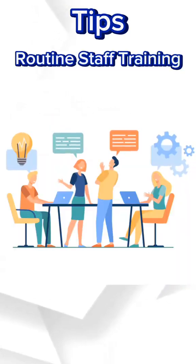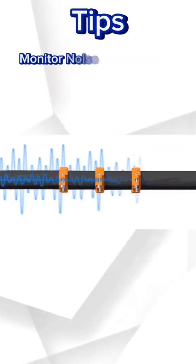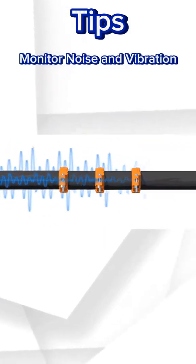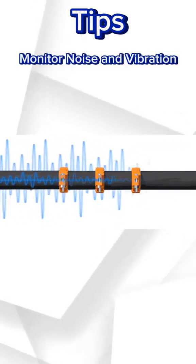Tips: 1. Ensure fluid purity. Avoid particulate accumulation that can damage the vanes. 2. Routine staff training. Train operators to perform regular maintenance. 3. Monitor noise and vibration. Increased noise or vibration can signal issues that need early attention.